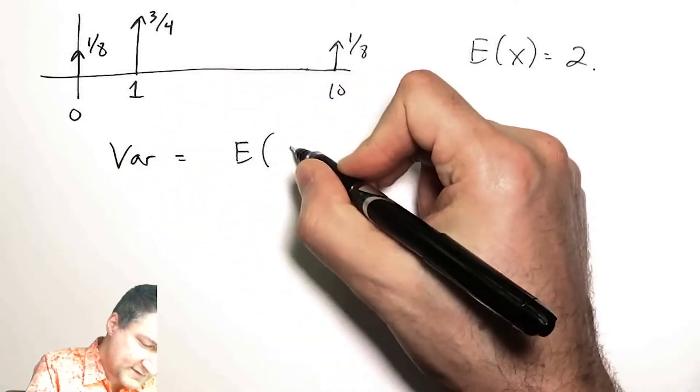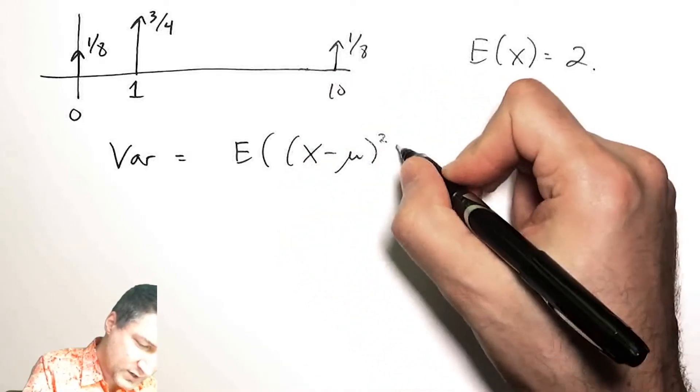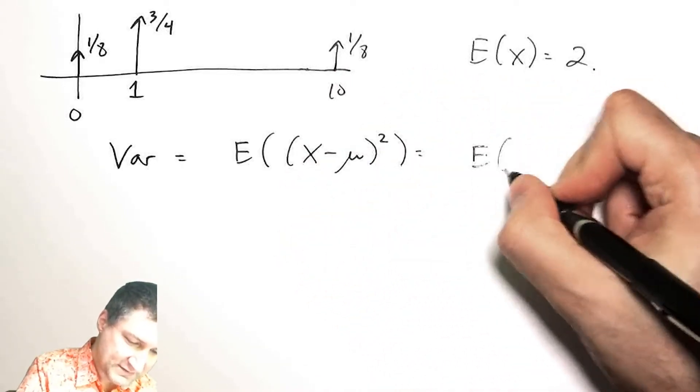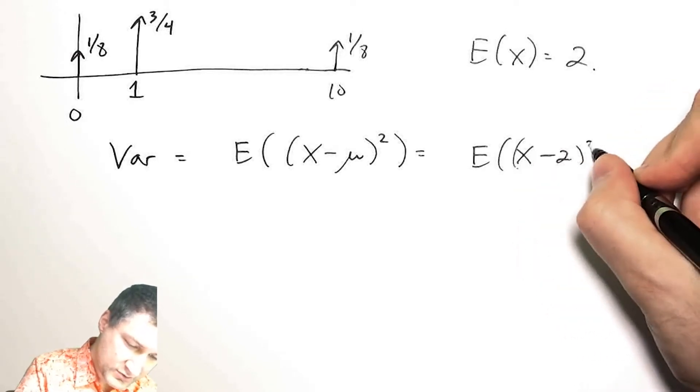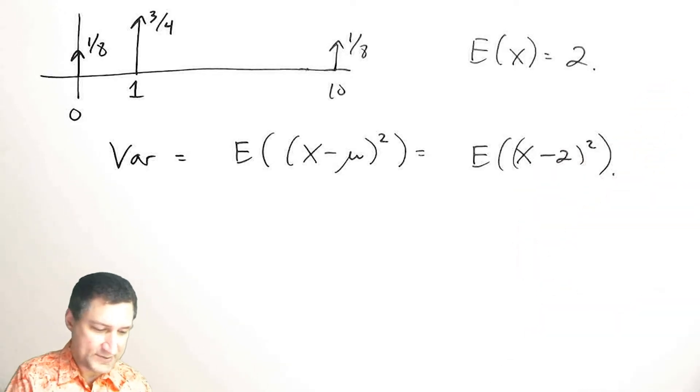In this case, it's like saying the expected value of (X minus 2) squared. This is like saying, with probability 1/8,